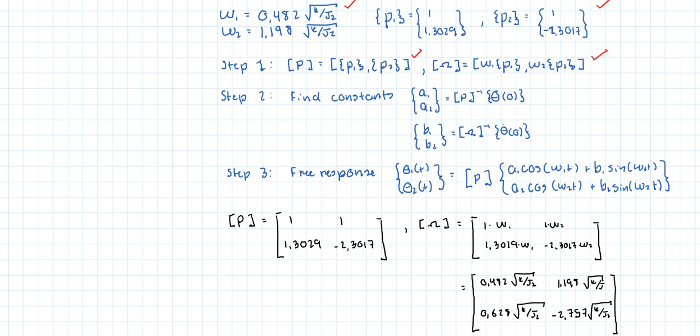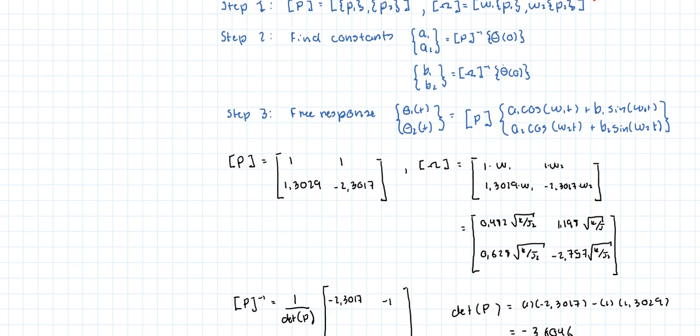Afterwards, we're going to look for the constants a sub 1 and a sub 2. And the way that we do that is by multiplying the inverse of the P matrix by the initial displacement vectors. And then we're going to find B sub 1 and B sub 2 by multiplying the inverse of the omega matrix times the initial velocity vector. Alright. Finally, with all of that, and actually we're going to use the constants, is in the final answer.